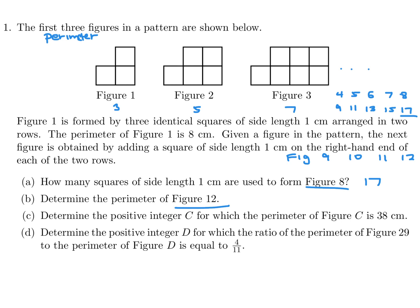Perimeter of this guy, the first one, is 1, 2, 3, 4, 5, 6, 7, 8. And then similarly, you can count the perimeter: 1, 2, 3, 4, 5, 6, 7, 8, 9, 10. And then in a similar way, this was 12.